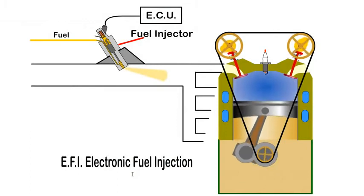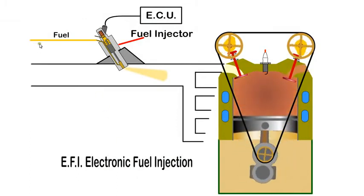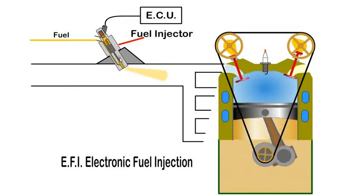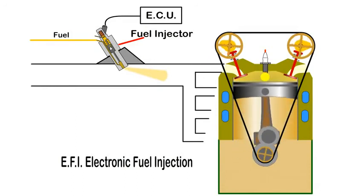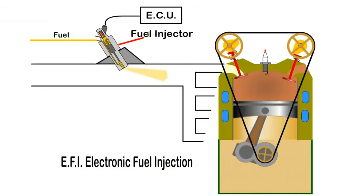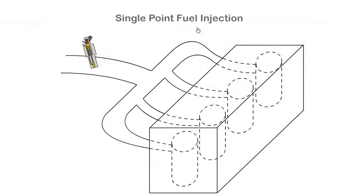With electronic fuel injection, EFI, a pump is used to pressurize the fuel which is atomized by the injector as it enters the inlet manifold. An electrical solenoid is energized by the ECU which determines the quantity of fuel required.